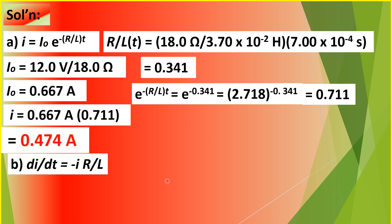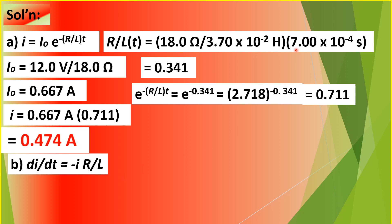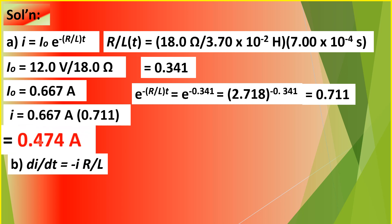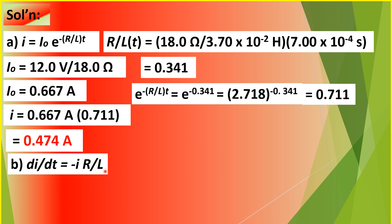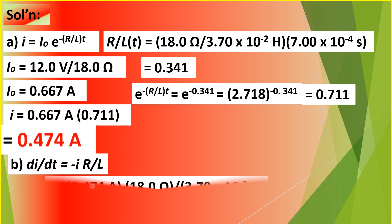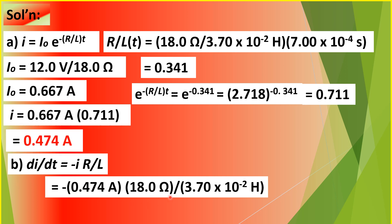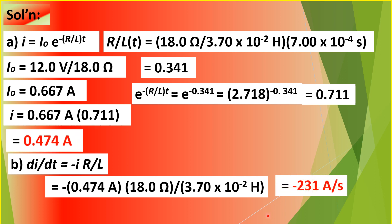For question B, we determine the rate of decrease in the current DI/dt at the same instant T equals 7.00 times 10 to the negative 4 seconds. We use the formula: negative I times R divided by L. Substituting the computed current 0.474 amperes, multiplied by 18.0 ohms, divided by 3.70 times 10 to the negative 2 henry, we get the rate of decrease of current equal to negative 231 amperes per second.